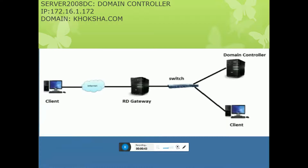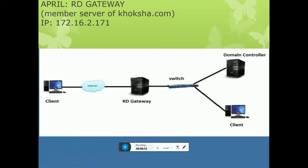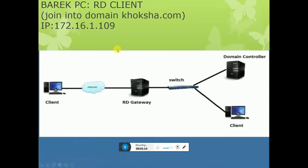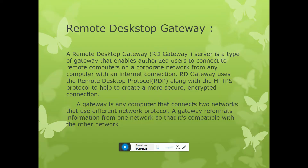The domain controller IP number is 172.16.1.172, domain COSASCO.com. The RD Gateway member server is COSASCO.com with IP 172.16.2.171. This is the client computer. I will show you the server, the remote gateway, switch, domain controller, and client. The client PC is already joined to the domain COSASCO.com at 172.16.1.9.